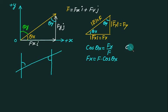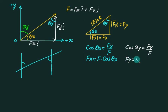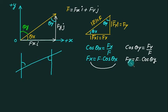This is the beauty of vectors: there is no sign confusion. If you want Fx, write cos(theta_x); if you want Fy, write cos(theta_y). Extending to 3D: Fz equals F cos(theta_z). The simplicity of the vector approach is that components are always F times cosine of the corresponding axis angle.